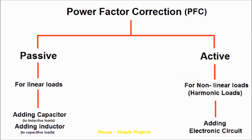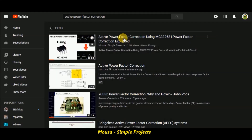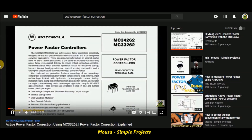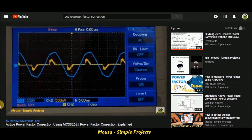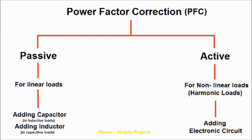There are two types of power factor correction: active and passive. Active power factor correction is used for non-linear or harmonic loads such as LED lamps, CFL lamps, and switching power supplies — I have a video about active power factor correction in my channel, link below in the description. In this video, I will explain passive power factor correction, which is used for motors and transformers and is usually done by connecting capacitors across the load.